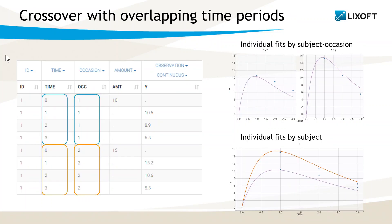In this first example from a crossover study, the dataset includes a subject of ID 1 with data collected during two independent treatment periods of time that both start at time 0, defined as occasion 1 and 2 with this column tagged as occasion.